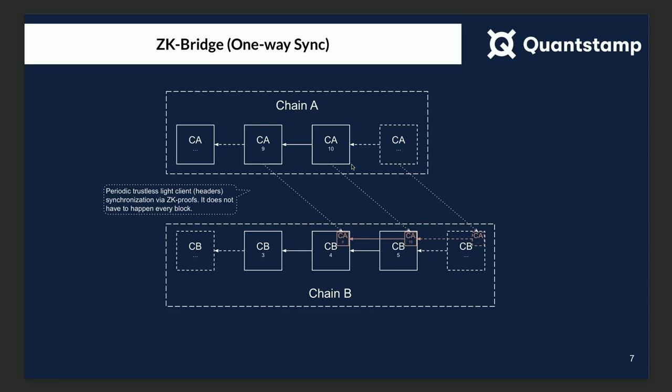So how would a ZK bridge work? The idea is that you have two chains, let's say chain A and chain B, and chain B would have a light client that synchronizes the state from chain A. So you could always prove that you have the funds on chain B, and that's reflected on the other chain. You could also imagine going the opposite way, where the state of chain B is reflected on chain A. This would allow you to have a completely trustless cross-chain bridge between the two chains.